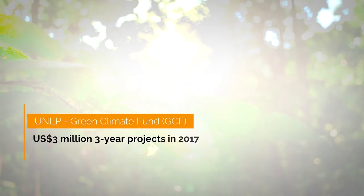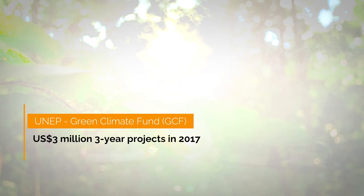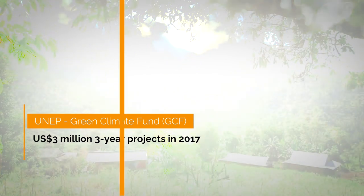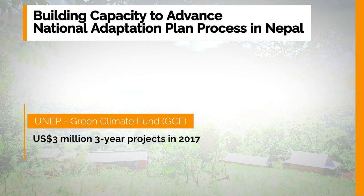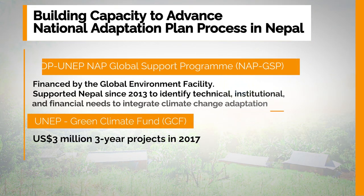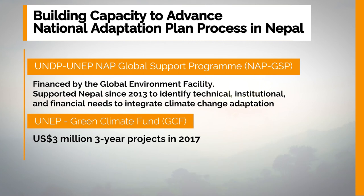Let's go back to the case study of Nepal and find out how they used external funding for their NAP process. UNDP supported the government of Nepal with almost $3 million from the Green Climate Fund for a three-year project in 2017 entitled 'Building Capacity to Advance National Adaptation Plan Process in Nepal.' This GCF project built on support already provided by the UNDP-UNEP NAP Global Support Program, which in turn is financed by the Global Environment Facility.